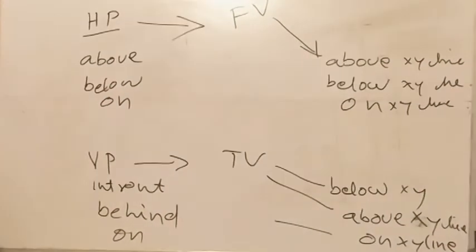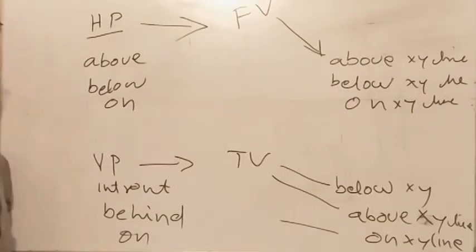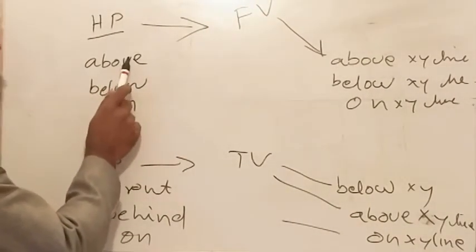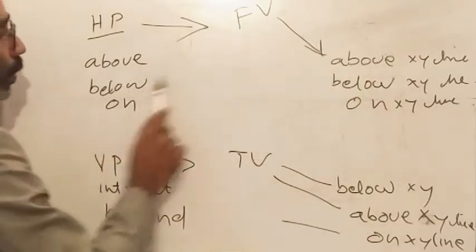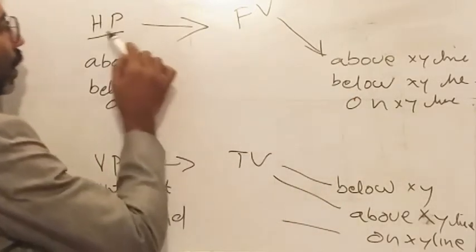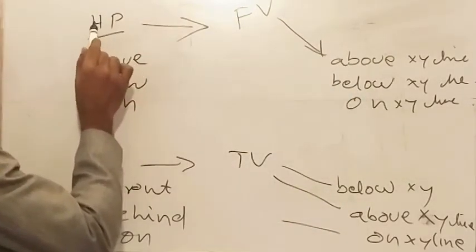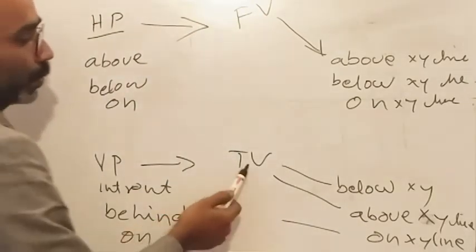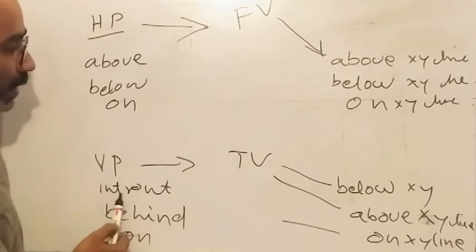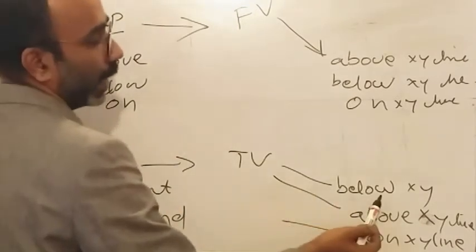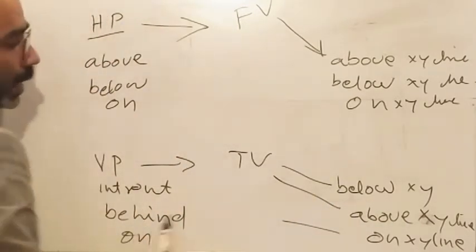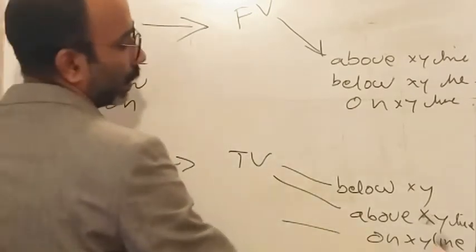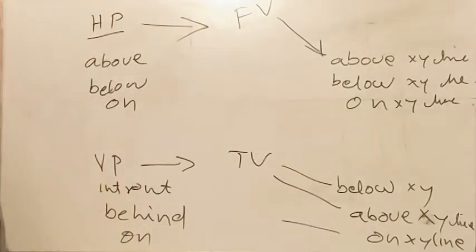This is a simple way to study projection of points. It is very easy to remember. The relation with HP is used to draw the front view, and the relation with VP is used to draw the top view. If it is in front, then the answer is below. If it is behind, then the answer is above. If it is on, then the answer of the top view is on XY line.